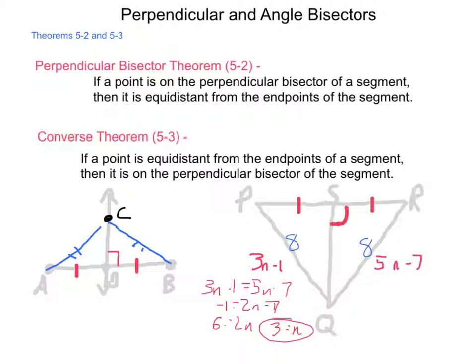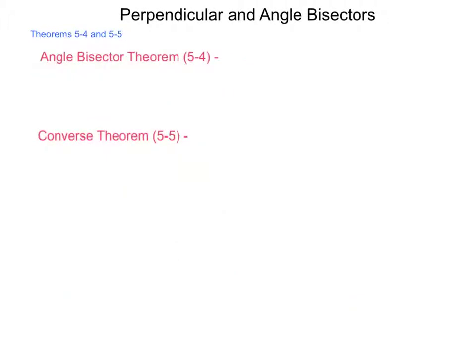Now, this works for side lengths, but we also need to have bisectors for angles. So, theorems 5-4 and 5-5 deal with the angles. Let's begin with 5-4.